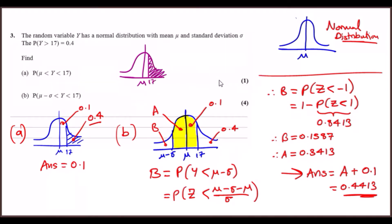The area bigger than 17 is 0.4. Just know that the left-hand side is 0.5, and this little gap between the mean and 17 must be 0.1. The one thing to know about normal distributions is that it's always symmetrical about the mean.